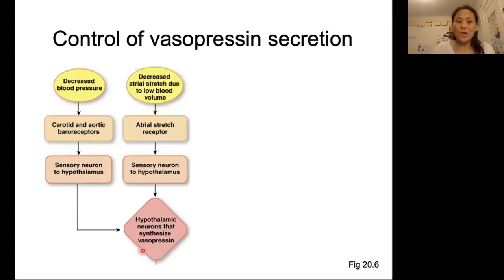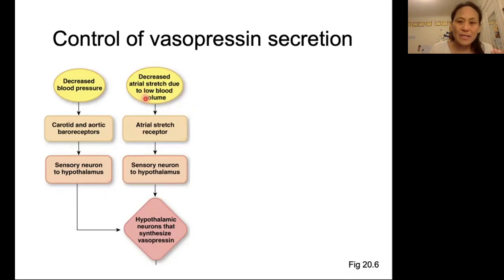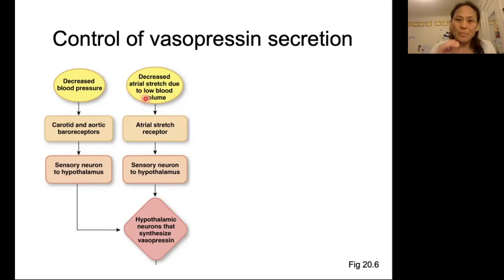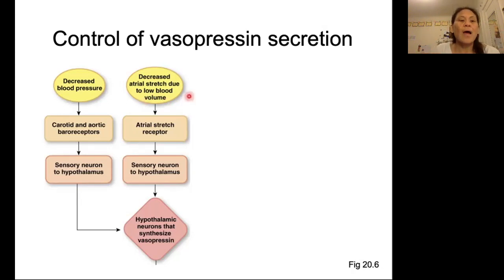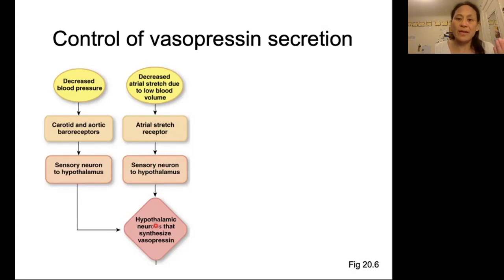For blood volume, it is a low blood volume that is going to stimulate vasopressin secretion — the same reasoning as before. Vasopressin secretion stimulates water reabsorption. If we have a low blood volume, we don't want to be losing more water to the outside environment; we want to keep that water in our bodies, so we secrete vasopressin and reabsorb water. Low blood volume is sensed by receptors in the atria of our hearts, which send a signal via a sensory neuron to the hypothalamus, which then secretes vasopressin.